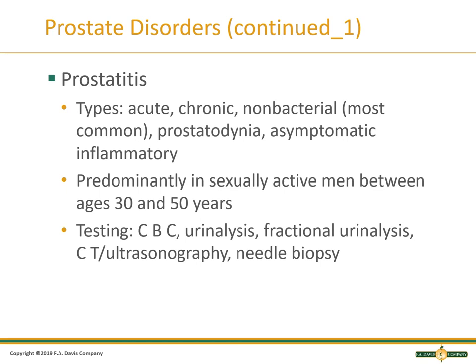Prostatitis can be acute or chronic and is not always bacterial, though bacterial is most common. Patients can be asymptomatic or present with symptoms similar to a UTI. It is most common in sexually active men between ages 30 and 50. Testing includes CBC, urinalysis with urine culture, CT or ultrasound as needed, and possibly a biopsy to rule out prostate cancer.